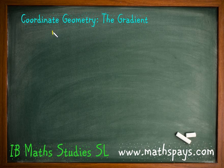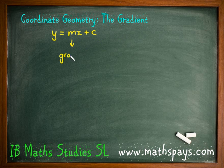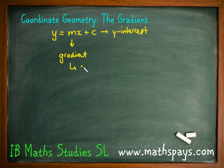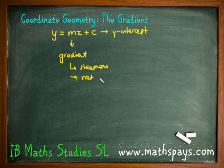As a quick recap from last lesson, we learned about y equals mx plus c, where m represents the gradient of a linear function and c represents the y-intercept. The gradient refers to the steepness of a straight line, or more precisely, the rate of change between the two variables x and y.